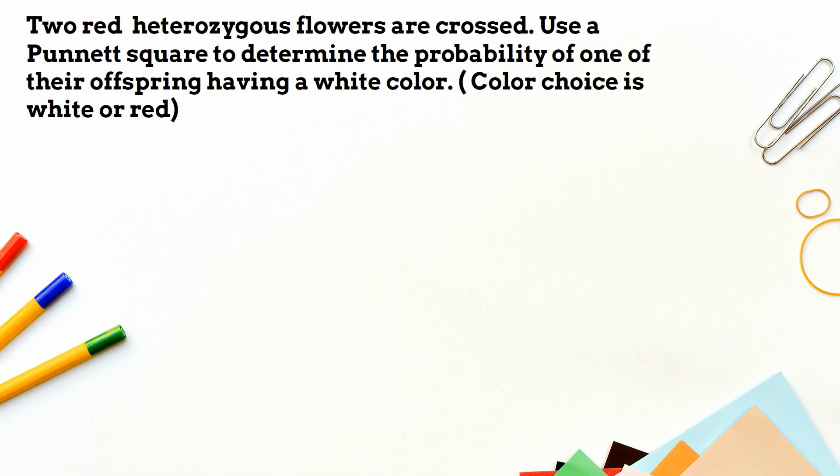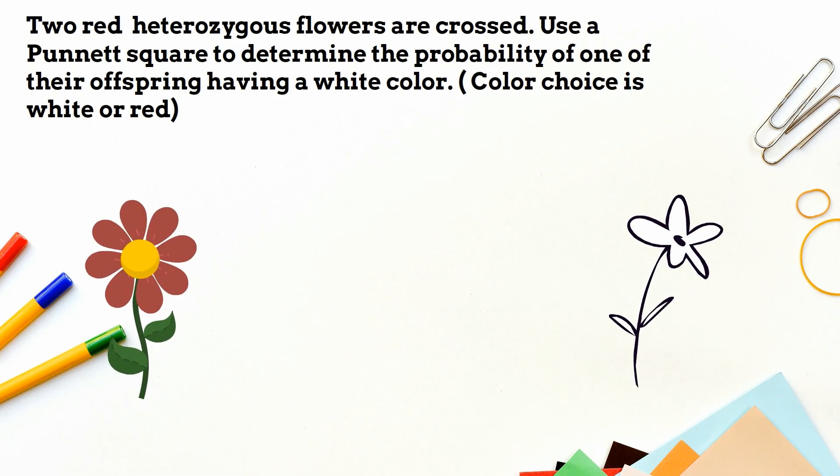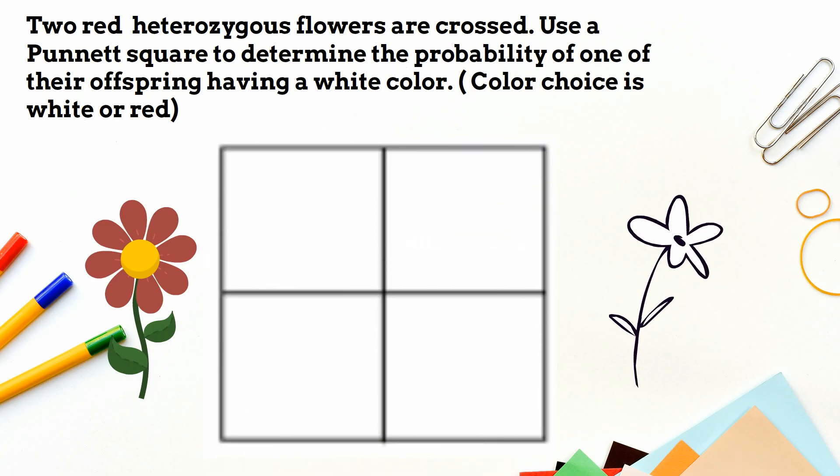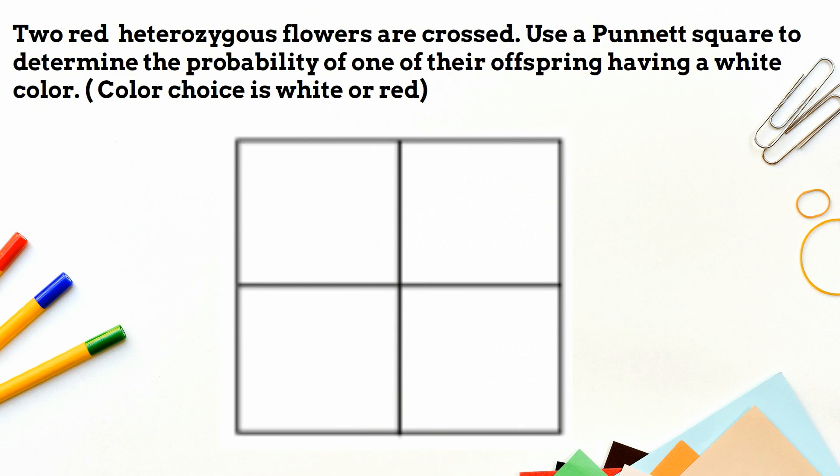So let's cross two heterozygous flowers. For this flower type, the color can be white or red. Use a Punnett square to determine the probability of one of their offspring having a white color. So let's draw the Punnett square. We will write the genotypes of the parents. I will look for information in the problem. Both flowers are heterozygous for red color. So I will use the letter T, and I will write a capital letter and a lowercase.